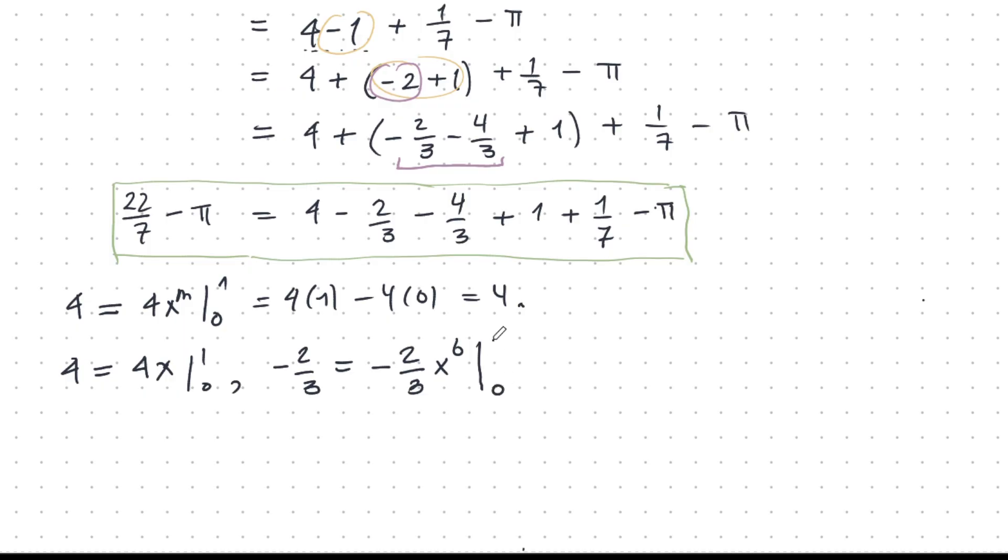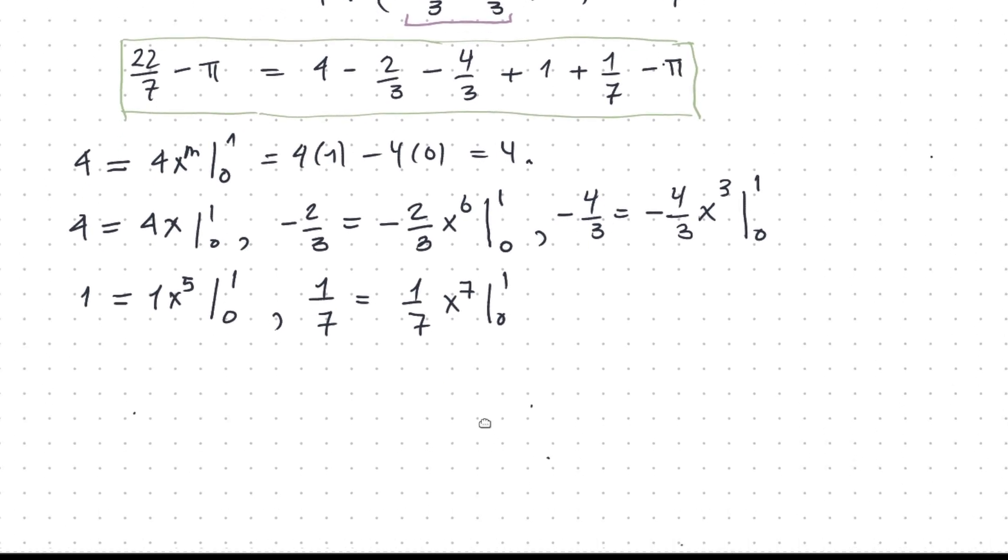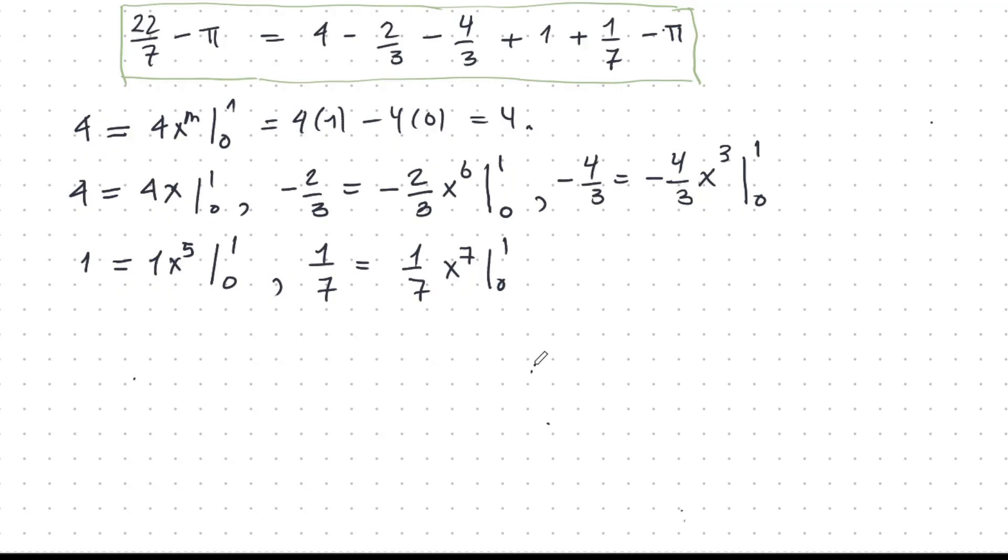And the minus 2 thirds term, the next term, I'll choose a power of 6, x power 6. And the next term is minus 4 thirds x power 3 from 0 to 1. It all works out if I choose these powers. 1 is 1 times x power 5 from 0 to 1. And 1 seventh x power 7 from 0 to 1. Some of these, you can see, were chosen probably to help get rid of the denominators of the fractions once they're differentiated.